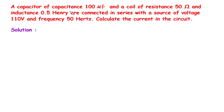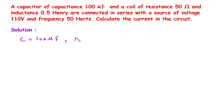Solution: First of all we will write what is given. The value of capacitance is C = 100μF, the value of resistance is R = 50 ohm, and the value of inductance is L = 0.5 henry.